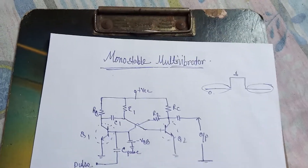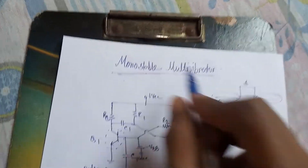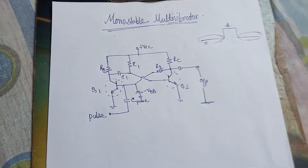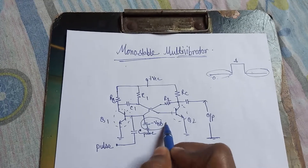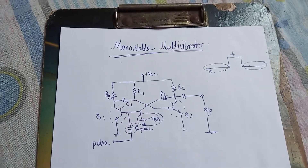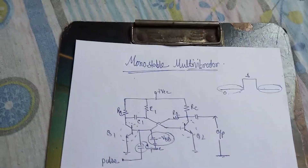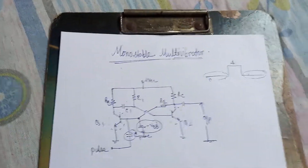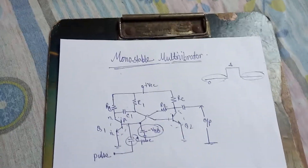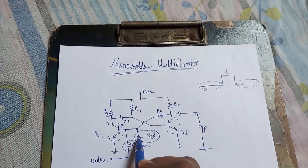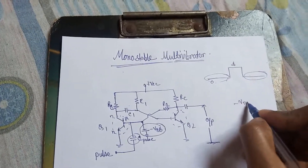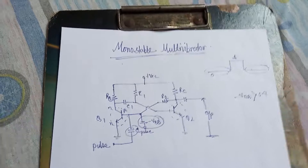That is known as triggering, and for this reason this is known as monostable multivibrator. In the circuit diagram of the monostable multivibrator, two additional things are added: one is minus VBB, and another is a capacitor known as the triggering capacitor or pulse triggering capacitor. For transistor Q1, the base is connected to a negative potential.